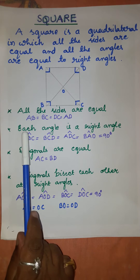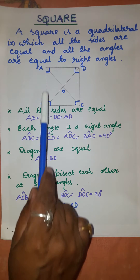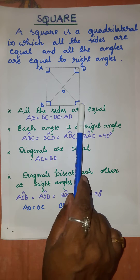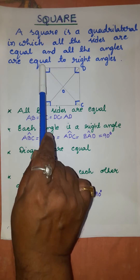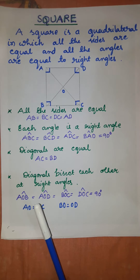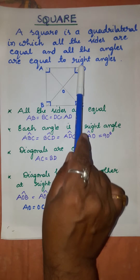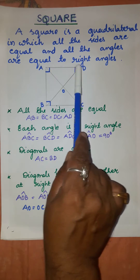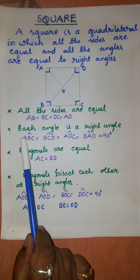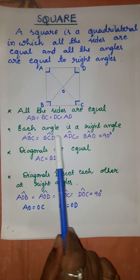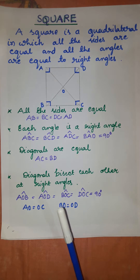The next important property: each angle is a right angle. Angle ABC, angle BCD, angle ADC, and angle BAD each measure 90 degrees.